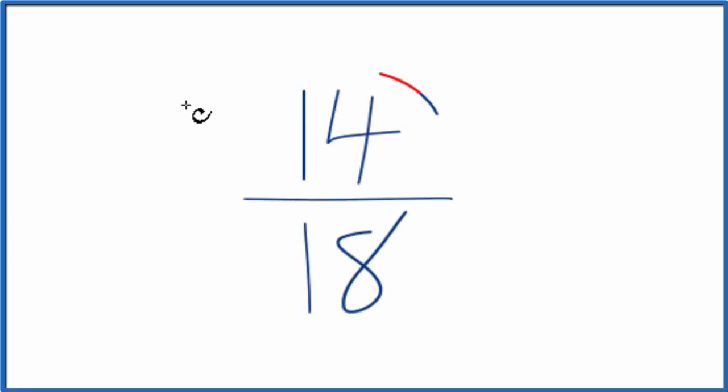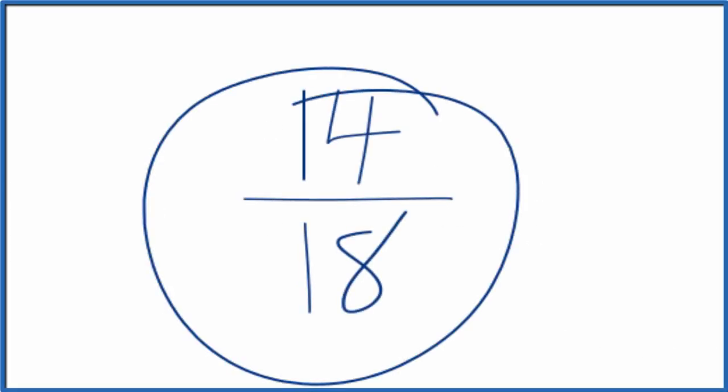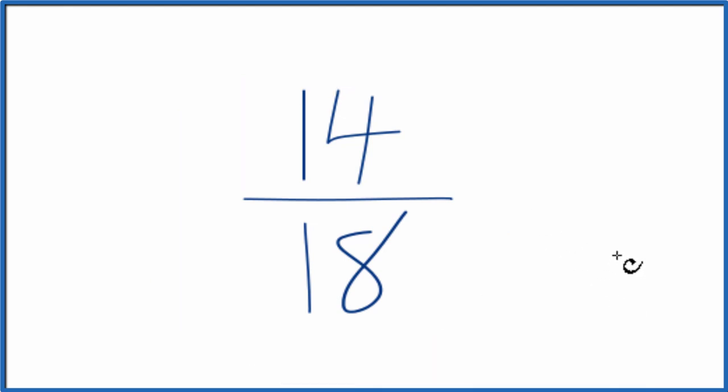Let's simplify the fraction 14 eighteenths, and here's how we do it. We want to find another fraction that's equivalent to 14 divided by 18, has the same decimal value, it's just in lowest terms.